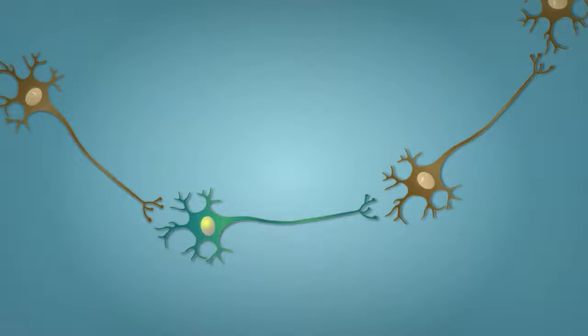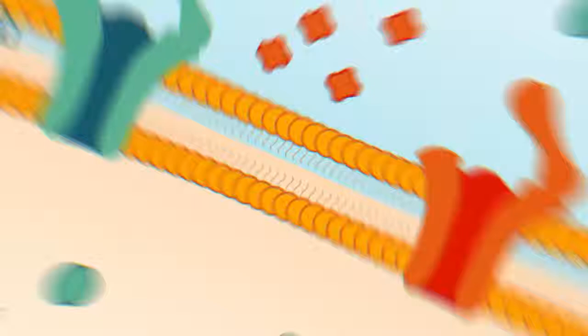This impulse allows neurons to transmit electrical signals from one cell to the next. But how does this sudden reversal of charge happen in the first place? Let's take a look.